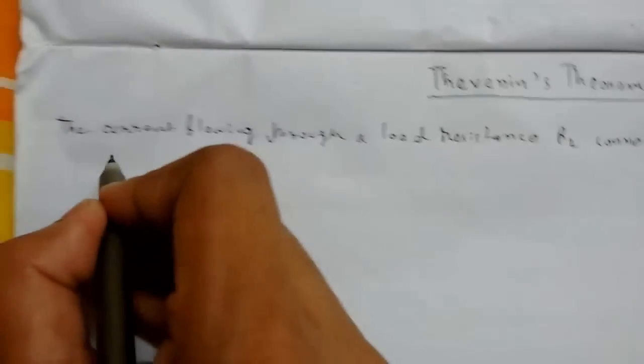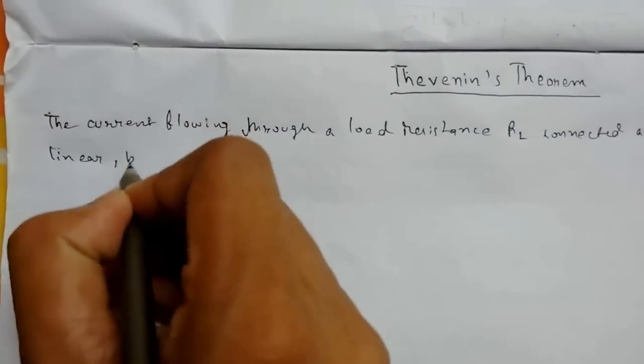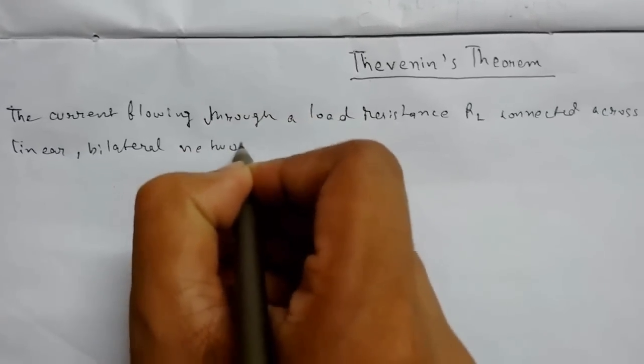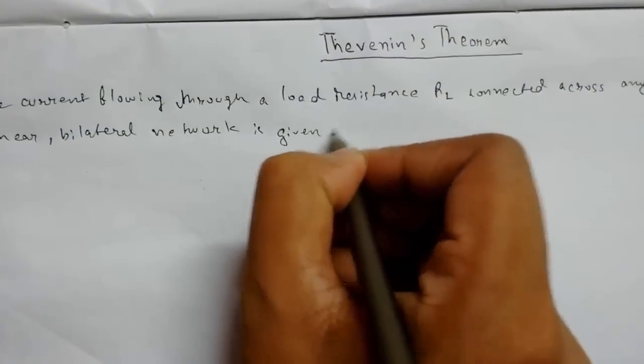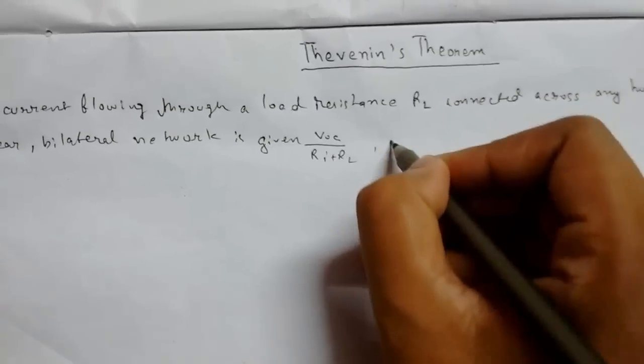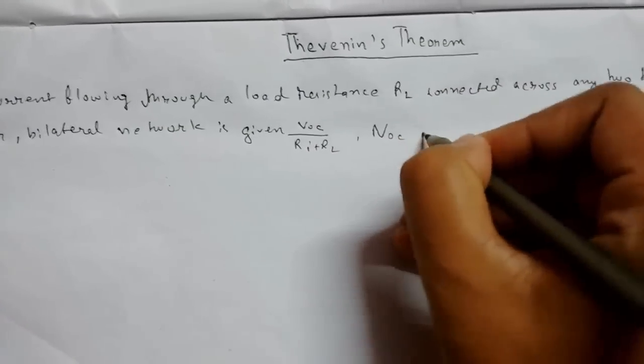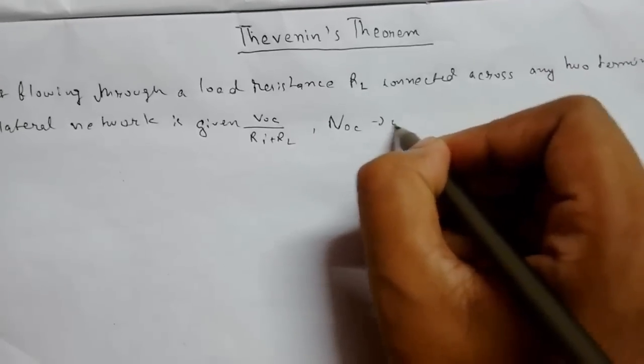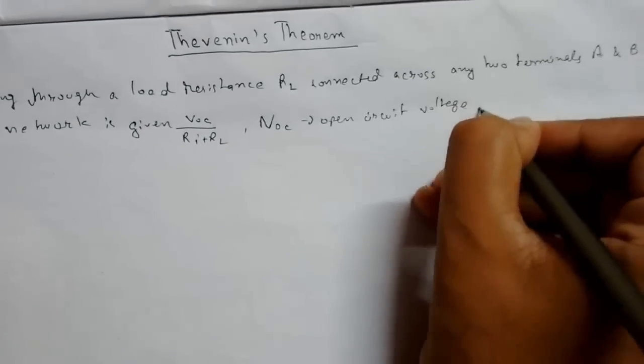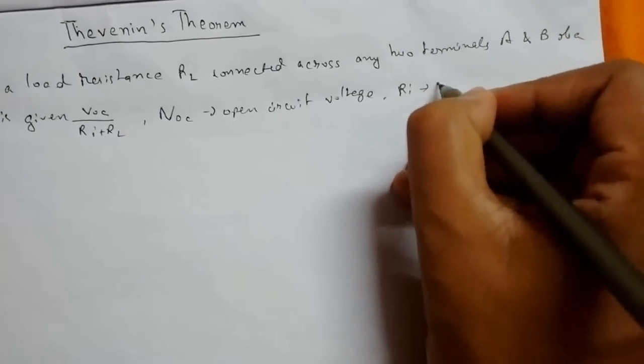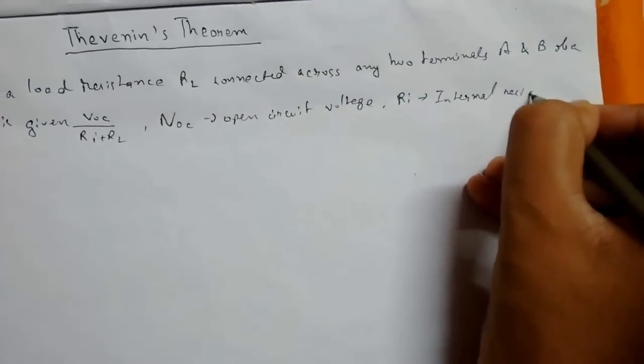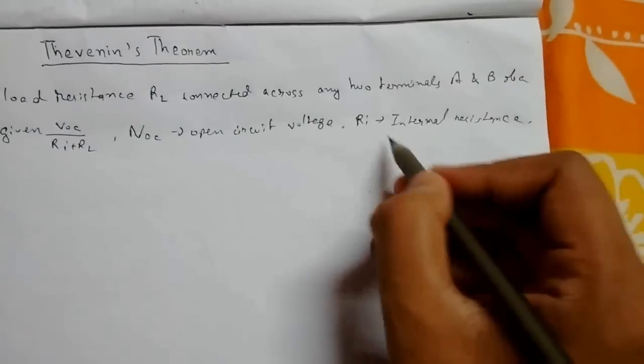a linear bilateral network is given by VOC upon (Ri plus RL), where VOC is the open circuit voltage and Ri is the internal resistance of the circuit viewed